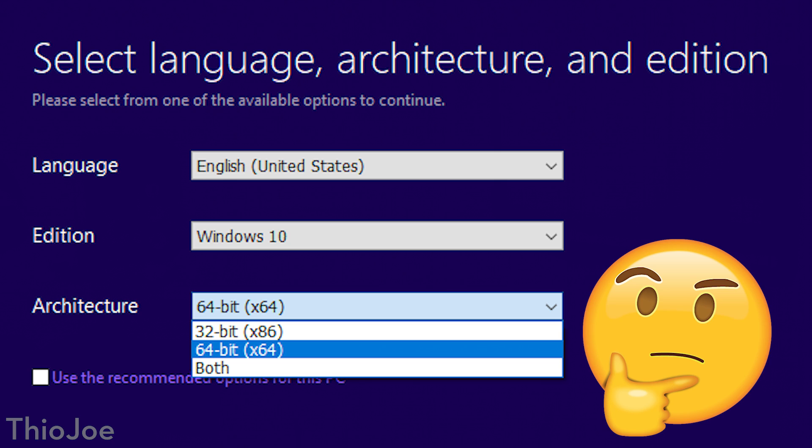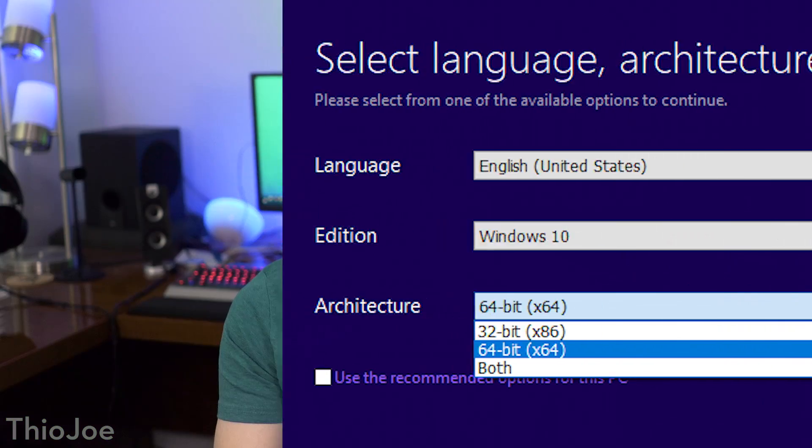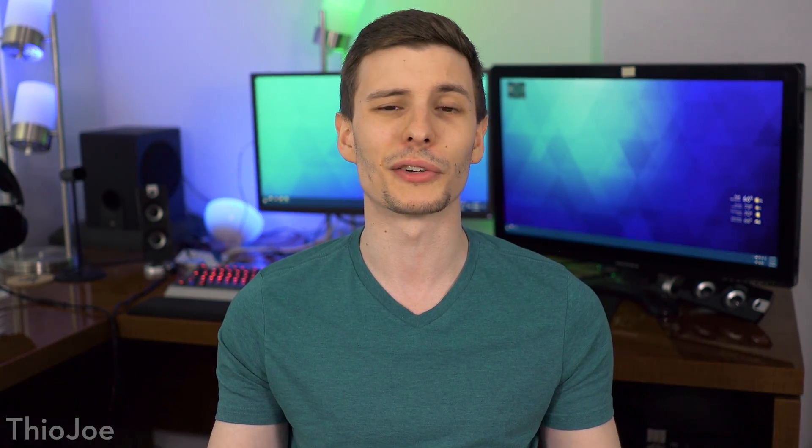If you're installing Windows anytime soon and you have the choice between 32-bit and 64-bit, you definitely want to go for 64-bit. There used to be issues with manufacturers not having drivers and programs not working, but now that pretty much everyone has it, all manufacturers are making 64-bit drivers. So you don't have to worry about that — you're not going to have any issues.